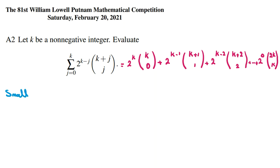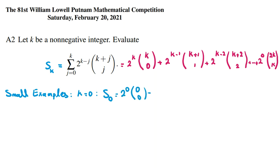One important idea that helps in many problems is considering small examples. Let's call this sum S_k and start with k=0. S_0 equals 2^0 times (0 choose 0), which is 1 times 1 equals 1, since 0! is defined as 1.